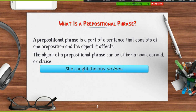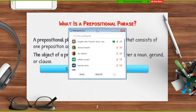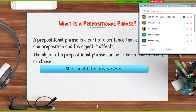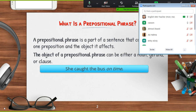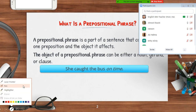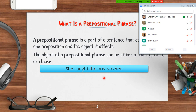She called the bus on time. Where is the prepositional phrase? On time — that's right, thank you. Now, what does 'on time' describe? It describes the verb 'called.' This means — what type of phrase is that? Adjective or adverb? That's right, it's an adverb phrase. Thank you.